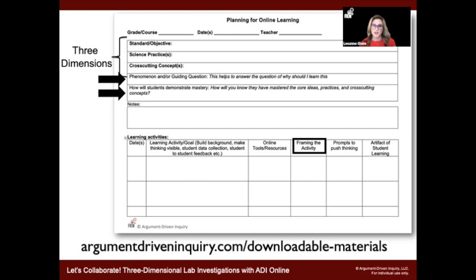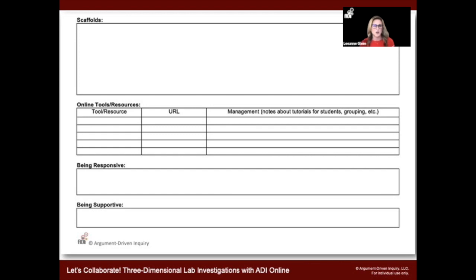We also want to look at what our phenomenon and guiding question is going to be, and integrate our backwards design — what is the goal we want from our students, and how are we going to get them there? What is a great argument for a given content area, and then design our supports around that. One thing I really want to point out is the framing the activity section. Because students are now learning online, there is so much peripheral noise with software they're engaging with and their physical space. We want to make sure we're really concise and clear about what we're expecting of students.